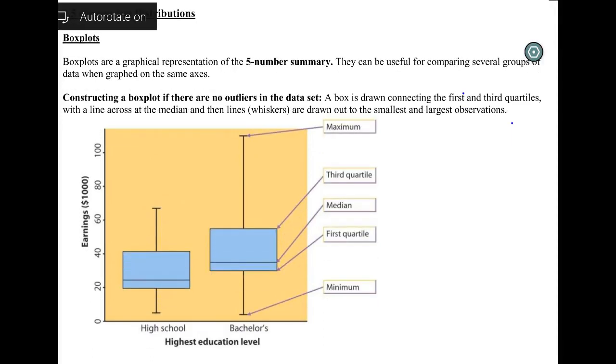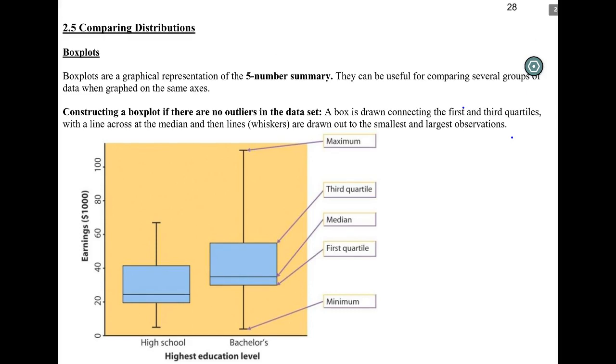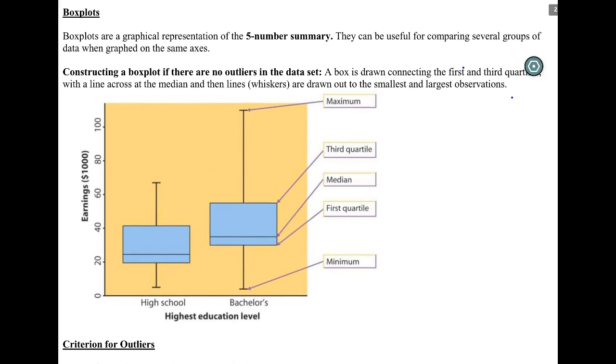We have one final display for quantitative data, and that's a box plot. Box plots give us a way to represent our five-number summary, and they're really useful, especially when we want to compare multiple groups. If we want to do comparisons with a histogram, stem plot, or dot plot, the best we can do is a back-to-back display, and those are fairly rare. So what we end up doing is this box plot.